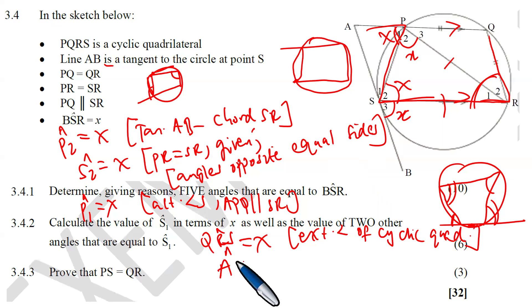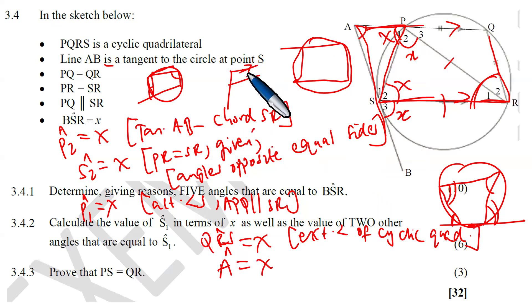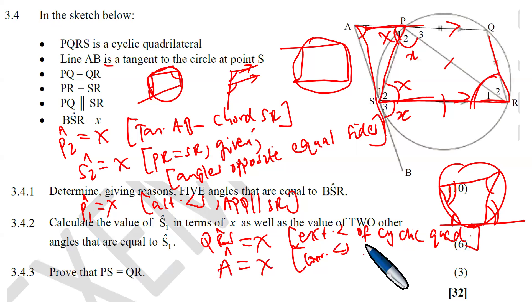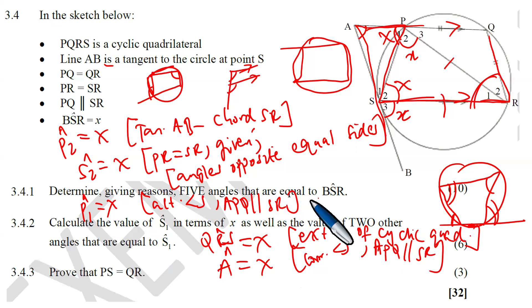Angle A is also x, because PQ is parallel to SR, making these corresponding angles. So corresponding angles — PQ parallel to SR — give us angle A equals x. We have now found all five angles equal to angle PSR: P2, S2, P1, QRS, and angle A.